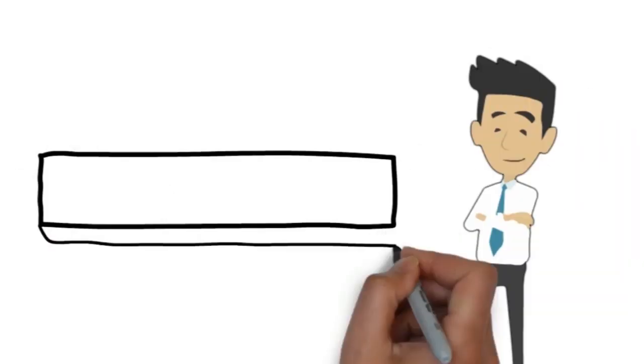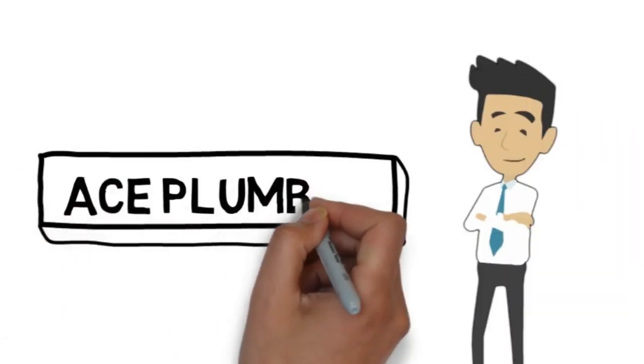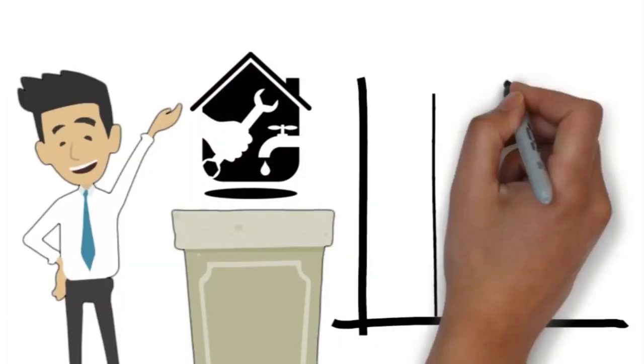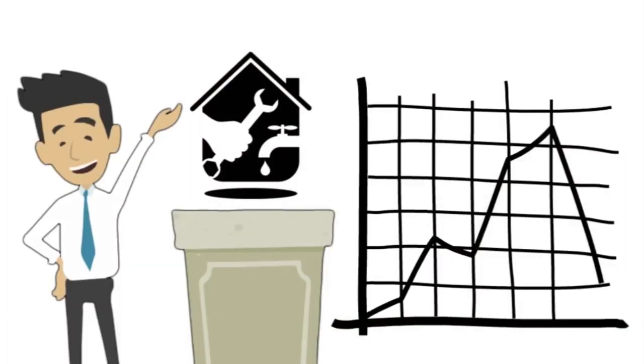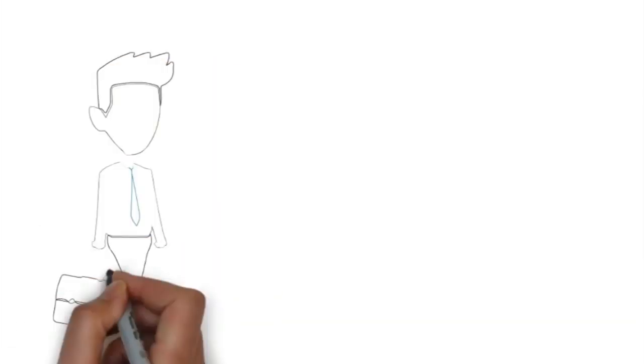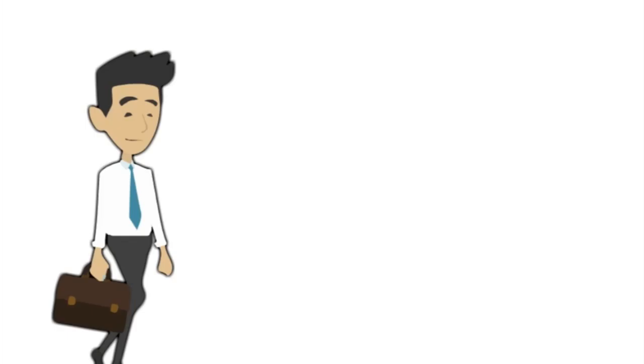This is Jack. After working for Ace Plumbing for 10 years, he decided to go out on his own and open his own plumbing company. But after being open for over a month, he is struggling to find new customers for his business and he is close to giving up and going back to work for Ace. This is Sarah.